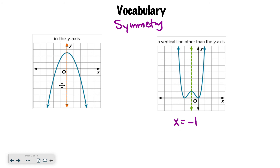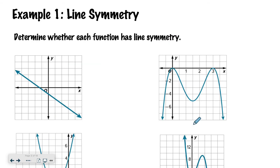For the y-axis, you would just write y-axis, or if you want to stick with the x theme, you would say x equals 0. So for the y-axis, you can say either y-axis or x equals 0. Everything else, you say x equals whatever the number is. So let's figure out if each graph has symmetry. If it does, let's say where that symmetry is. If it doesn't, we just move on.